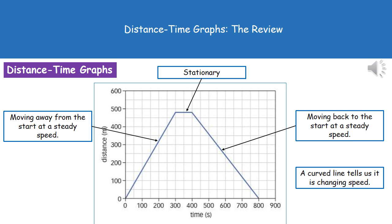Then we come into this negative gradient for the third part of our graph. We can see that the time is increasing but the distance is decreasing. That tells us our object is moving back to its start point, and it's doing so at a steady speed because it's a nice straight line.